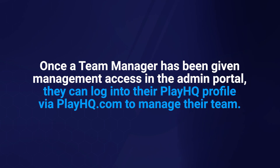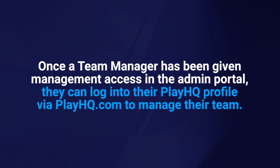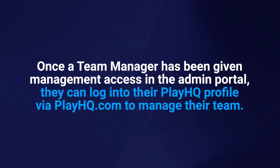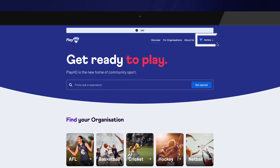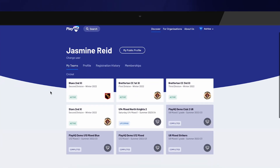Once someone has been given management access from an admin, they will be able to log into their PlayHQ profile via playhq.com to manage their team. Once logged in, select your name in the top right-hand corner followed by My Account. Team managers will see a list of teams they have been allocated to.